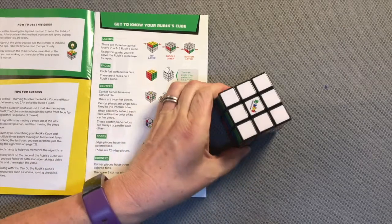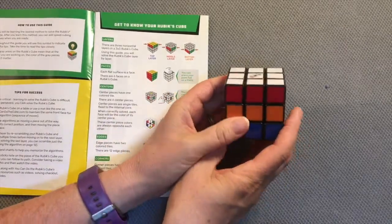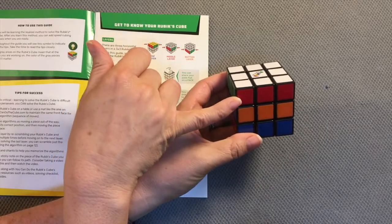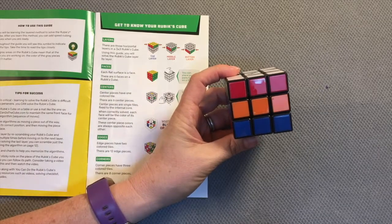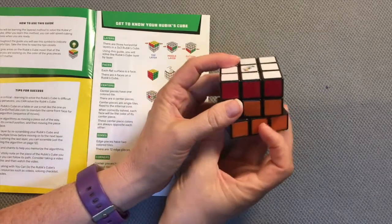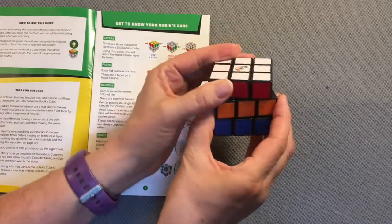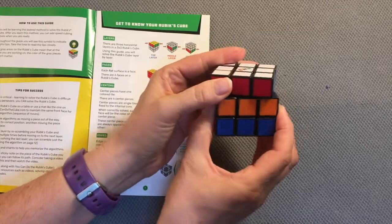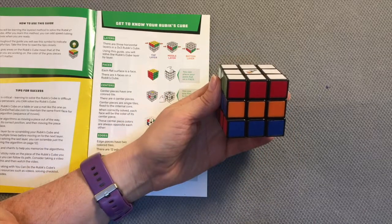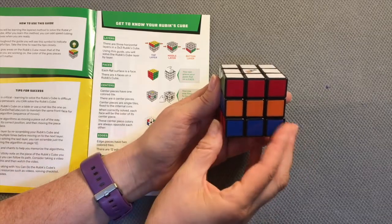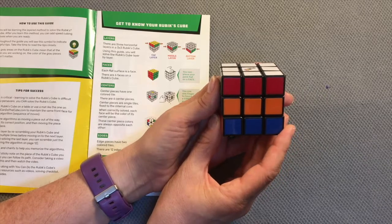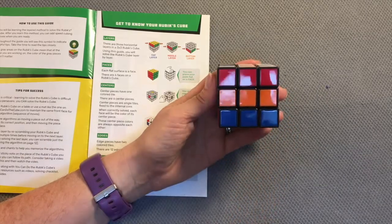There are three horizontal layers in the three by three Rubik's Cube. A top layer, which here is red, the middle layer, here is orange, and the bottom layer, which is blue. These layers move independently. You can think of them as a three-tiered wedding cake. The top layer of the cake, the middle layer of the cake, and the bottom layer of the cake. Using this guide, you will solve the Rubik's Cube layer by layer.